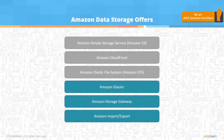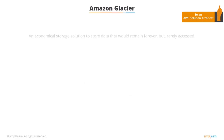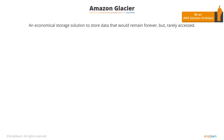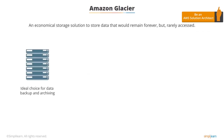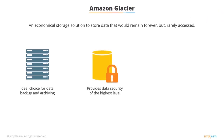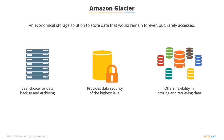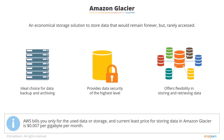In this topic, we will learn about Amazon Glacier. Amazon Glacier is an economical storage solution to store data that would remain forever but rarely accessed. It is an ideal choice for data backup and archiving, provides data security of the highest level, and offers flexibility in both storing and retrieving data. AWS bills you for only the used data or storage, and the current price for storing data in Amazon Glacier is $0.07 per gigabyte per month.